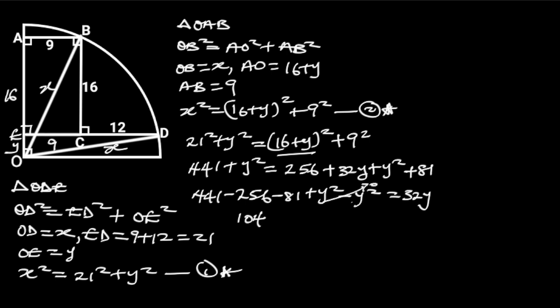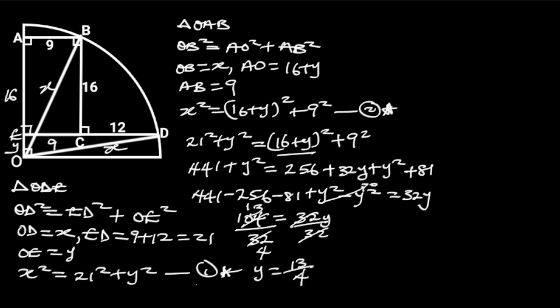So we are left with 104 is equal to 32Y. Dividing both sides by 32, 104 divided by 32 gives us 13 over 4. So Y is equal to 13 over 4. Now we know the value of Y, let's go ahead and substitute Y with 13 over 4 in equation 1.